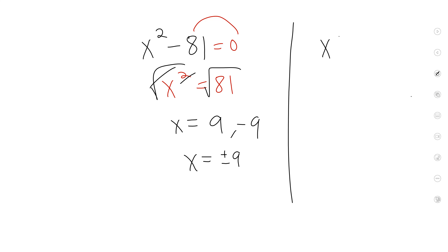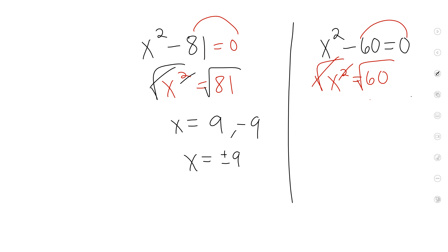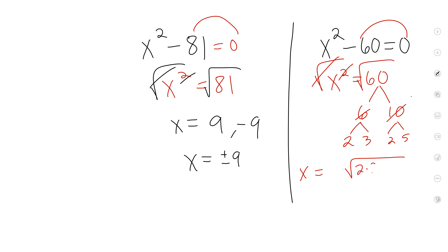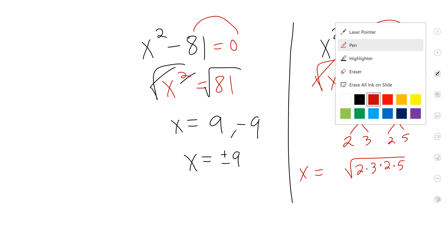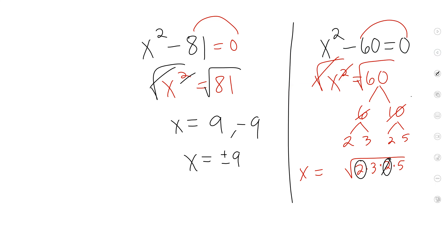Let's say we didn't have a perfect square like this. You should have moved this over so that it's x² = 60. We don't know what the square root of 60 is, so we're going to have to break it down. I can do 6 times 10, 2 times 3, 2 times 5. Now it's broken down. So x will be equal to the square root of 2 × 3 × 2 × 5. Here are a pair of 2s — cross it out, one goes outside. So your answer is ±2√15.